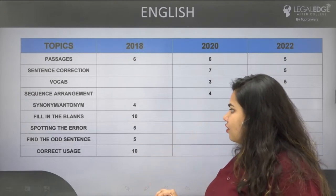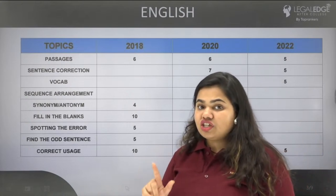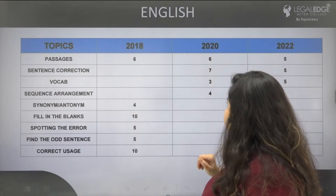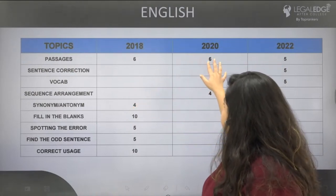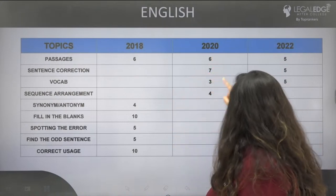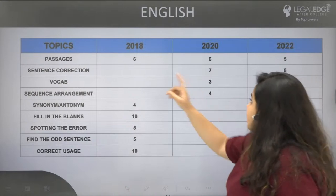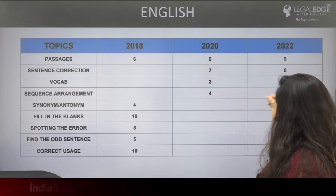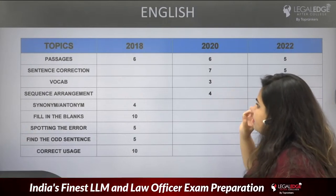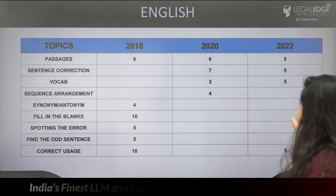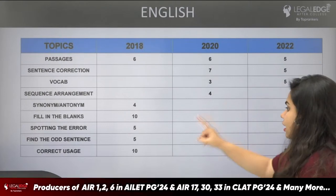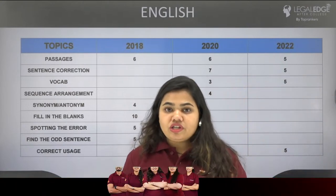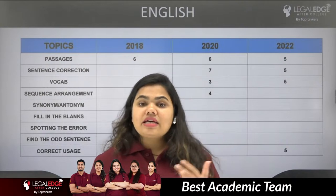In 2018, there were 5 questions in finding the odd sentence and 10 questions in correct usage. Comparing 2020 and 2022: passages remained 6 in 2022; sentence correction had 7 questions in 2020 and 5 in 2022; vocab had 5 questions in 2020 and 3 in 2022; sequence arrangement had no questions in 2022; correct usage had 5 questions. So a pattern of 5-5-5 questions may repeat in the upcoming exam.